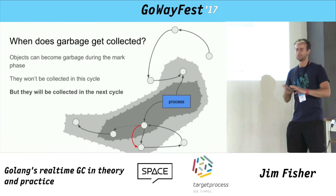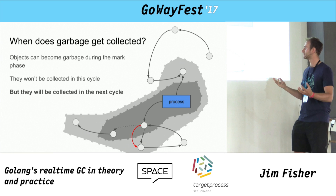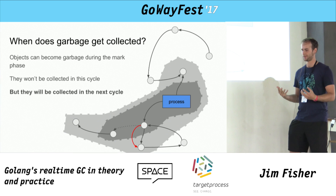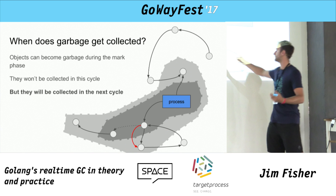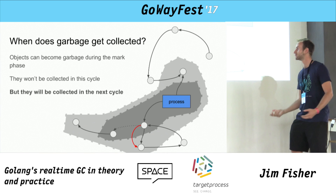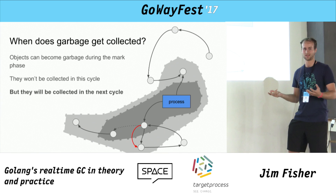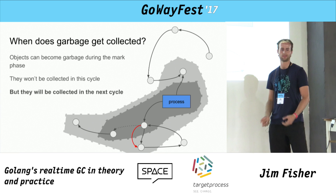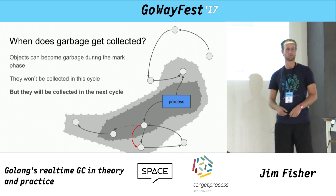Another detail: since things run concurrently, it's possible for an object to be marked as not garbage but then actually become garbage during the process — a floating garbage situation. This algorithm won't leak, though: that object won't be collected in this cycle, but it will be collected in the next run. The guarantee is that every object that becomes garbage is collected within two runs of mark and sweep.